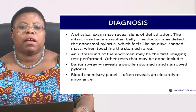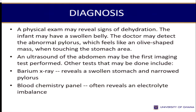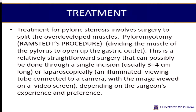The doctor would examine the child, do a scan, a barium examination, take a history, and do a blood test. When this is done, the child is prepared for surgery. The specific surgical procedure for pyloric stenosis is called the Ramstedt procedure, also called pyloromyotomy, where they expand the narrowed, closed pyloric lumen.